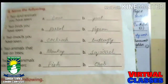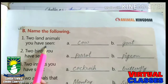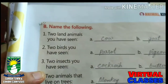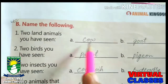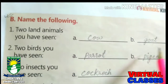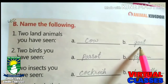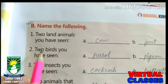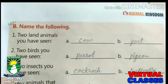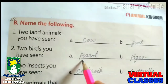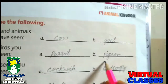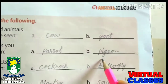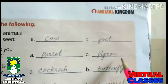Now come to page number 31, Exercise B: Name the following. Two land animals you have seen: the first is cow — C-O-W — and the second is goat — G-O-A-T. Two birds you have seen: the first is parrot — P-A-R-R-O-T — and the second is pigeon — P-I-G-E-O-N.